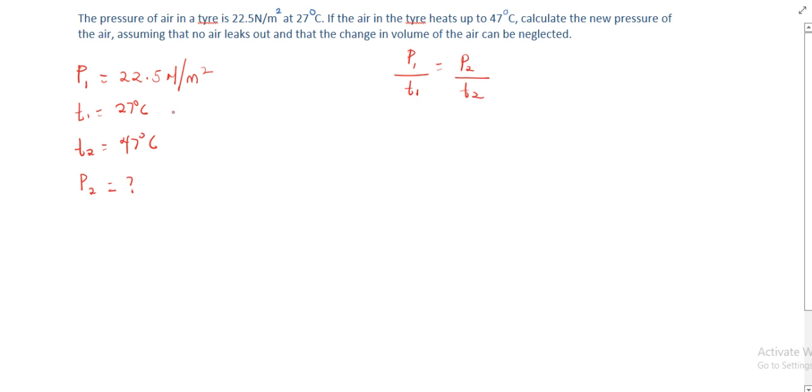So we will be converting our temperatures to Kelvin. To convert to Kelvin, we add 273 to it. So we have 27 plus 273, which will give us 300 Kelvin, and also 47 plus 273, which will give us 320 Kelvin.